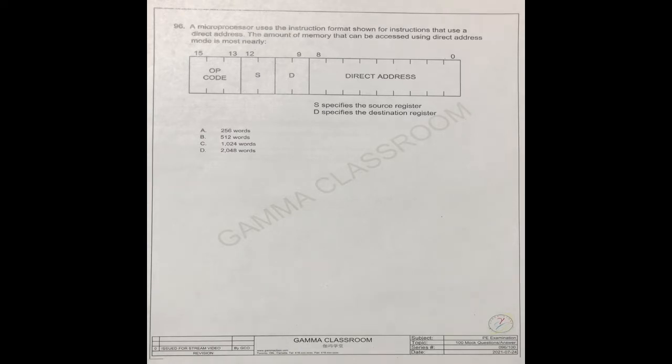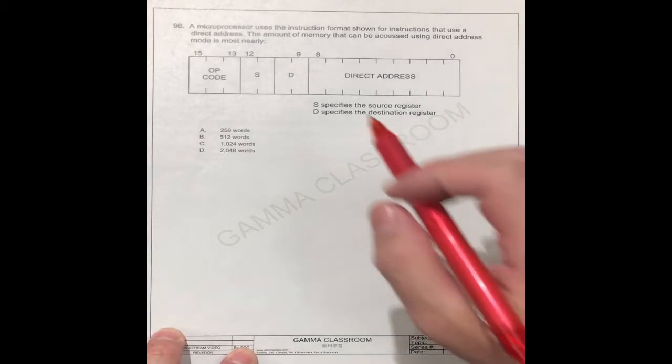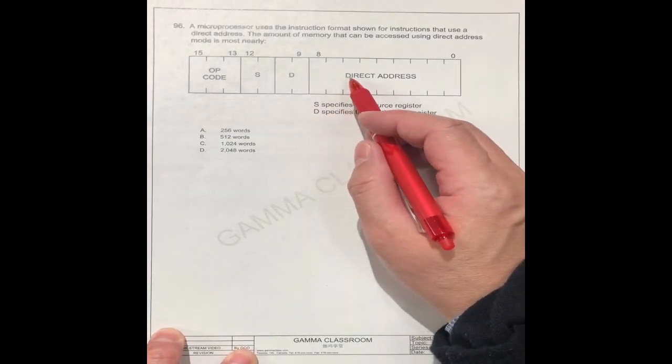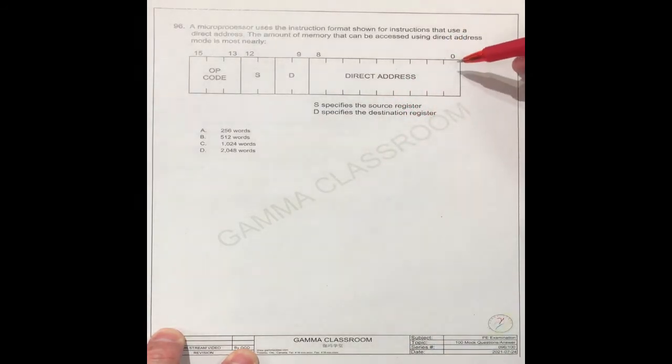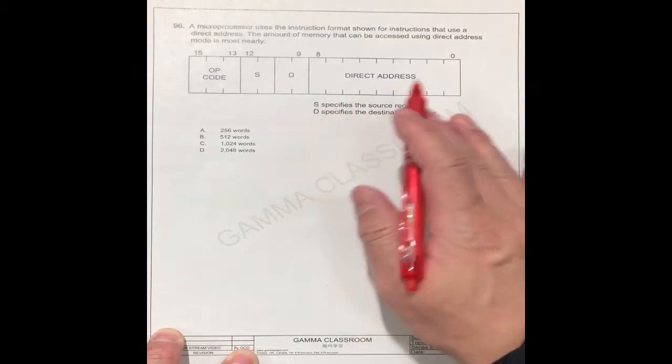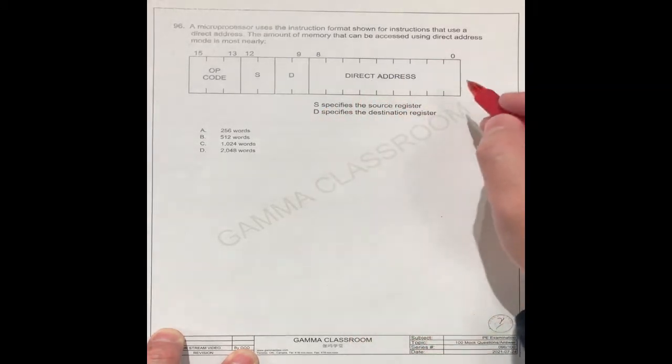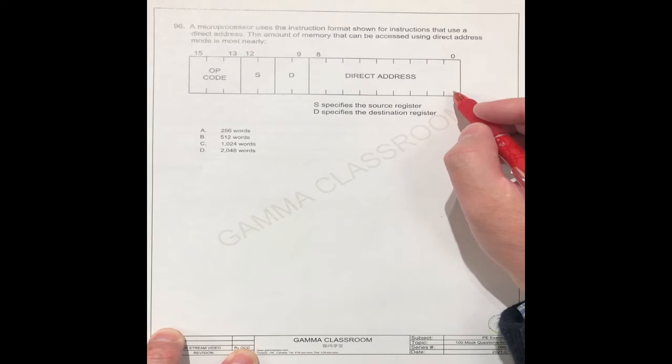We know this talks about direct address. You see here is the direct address. They take the information from this memory. You see this direct memory, they have how many bits, right?